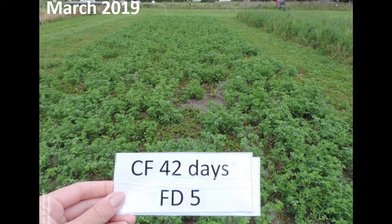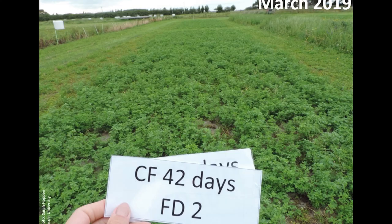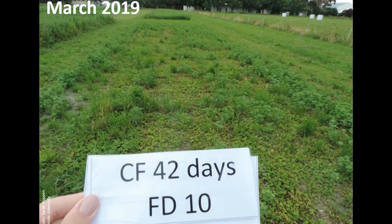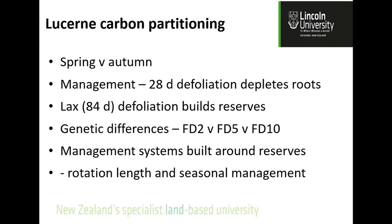The consequences are easy to see: a five-year-old lucerne stand at Lincoln shows gaps opening up for a traditional FD5 cultivar. The FD2 winter-dormant one shows fewer gaps, but the aggressively defoliated FD10 has grown itself to death — it's effectively never had time to put reserves underground. We always think about dry matter production but not about what's going on below ground. Carbon partitioning for lucerne differs in spring and autumn, and management makes a big difference. A too-frequent 28-day defoliation depletes reserves; I need a long rotation at some point to rebuild them, and there are genetic differences within the species.